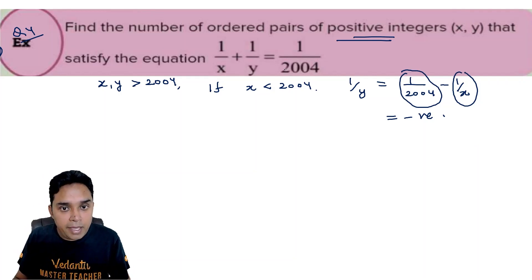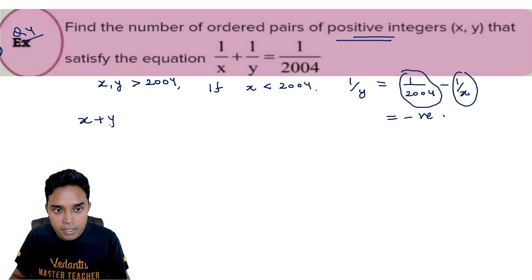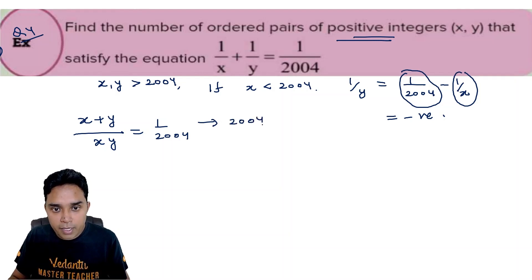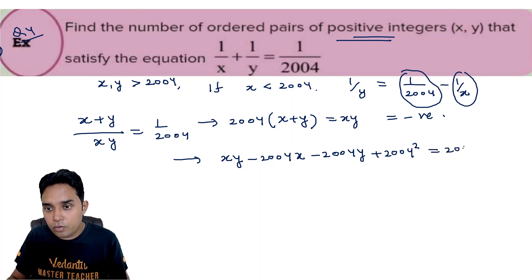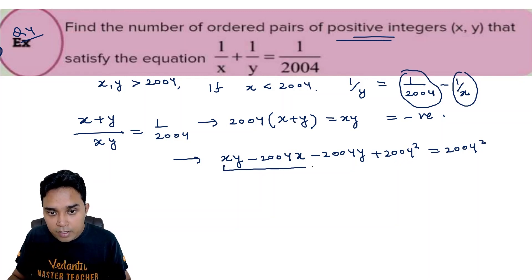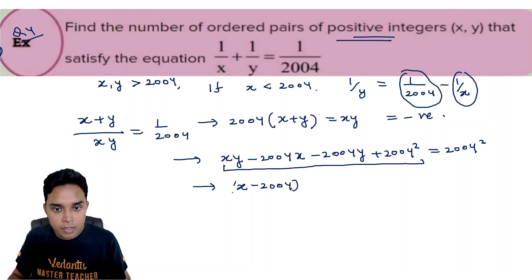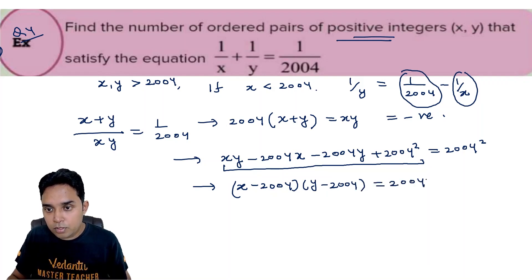Taking the LCM on the left: (x+y)/(xy) = 1/2004. Cross-multiplying gives 2004(x+y) = xy. Moving all terms to one side: xy minus 2004x minus 2004y equals 0. Adding 2004² to both sides allows factoring as (x − 2004)(y − 2004) = 2004².